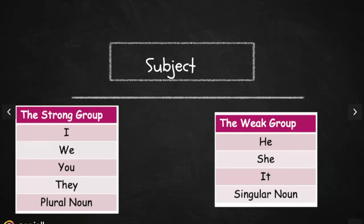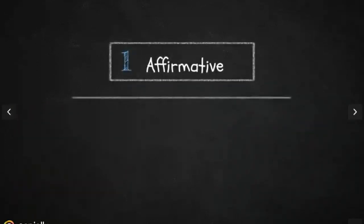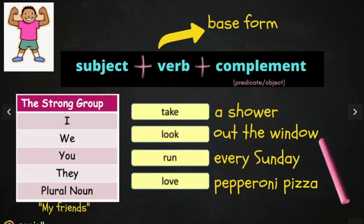And the second group is the weak group. It includes pronouns such as he, she, or it, or a singular noun. For the first group, in the affirmative form, we're going to use this formula: subject, verb in base form, plus complement.